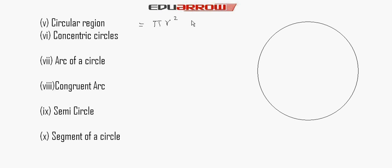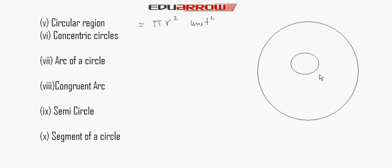Now we read about concentric circles. Two circles whose center is the same are called concentric circles. This is the center of both circles, so they are called concentric circles.